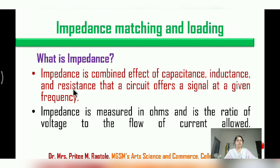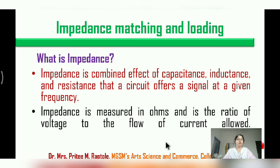Impedance is represented using the formula Z, and just as resistance is measured in ohms, impedance is also measured in ohms. Impedance is the ratio of voltage to current — Z is equal to V upon I.